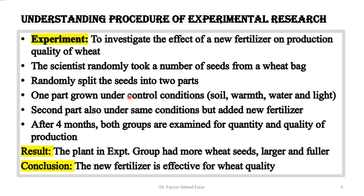The controlled environment includes soil, warmth, water, and light. We provide the same quality of soil to both groups, maintain the same temperature or warmth for both, and keep the amount of water and intensity of light the same for both seeds. These are the variables that can affect the quality of wheat, so we control these conditions by keeping them the same for both groups.